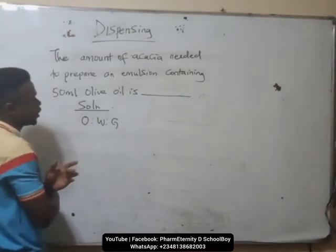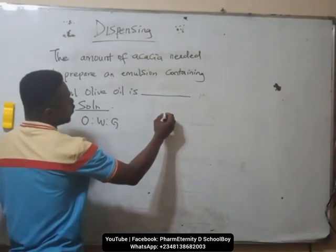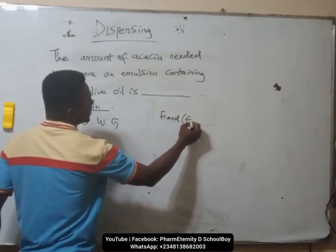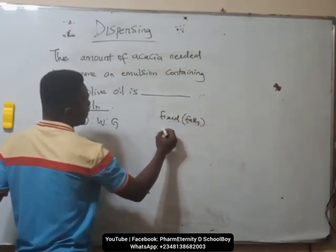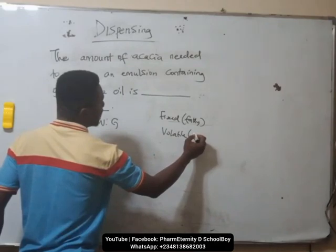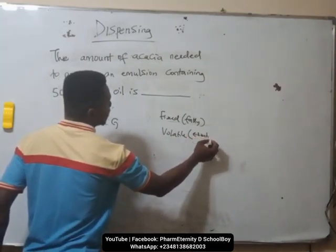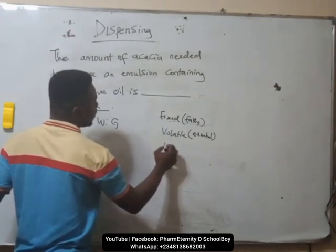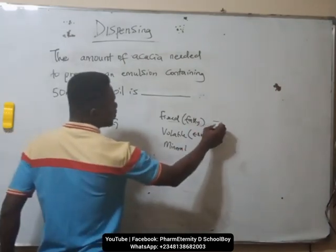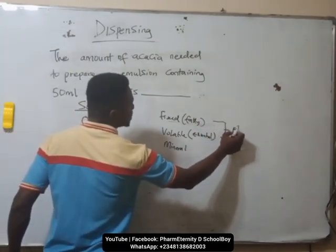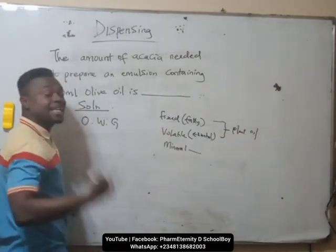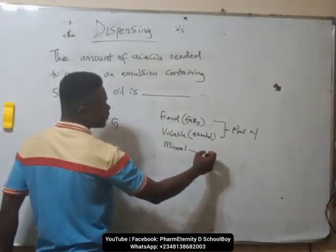I want to talk about some oils. We have fixed oil — they are fatty in nature. We have volatile oil, also called essential oils. Then we have mineral oil. Fixed oils are basically plant oils, while mineral oils come from refined petroleum products, petrochemicals.